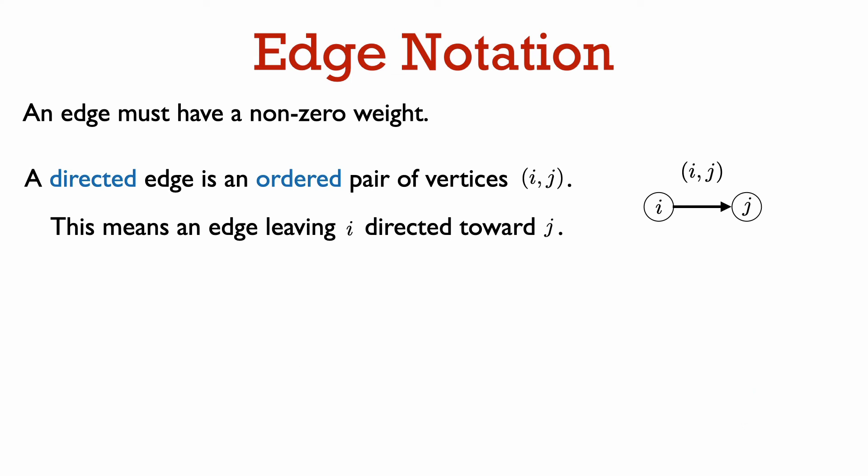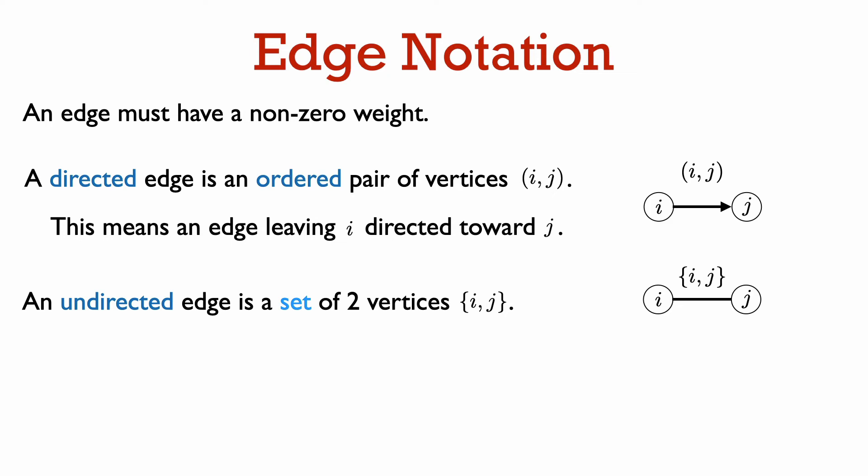Let's go over notation for these kinds of graphs. We think of a directed edge as an ordered pair of vertices, written as (i, j), to represent an edge that starts at i and is directed towards j. An undirected edge is a subset of two vertices, written in set notation as {i, j}. In a diagram, an undirected edge is represented by a line segment with no arrows.